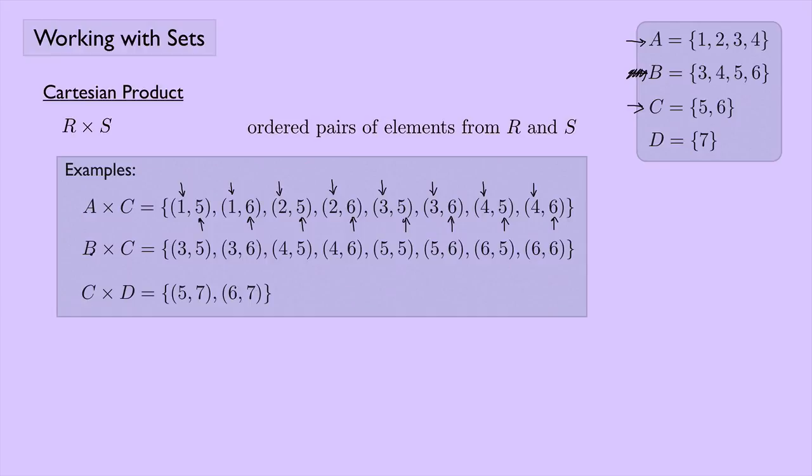Here's the Cartesian product of B and C. Here we see all the ordered pairs where the first element is from B, that would be the three, four, five, and six. And the second element is from C, that's the five and the six. It's okay to have duplicates in the sense like we have a five and a five, that's totally fine, and a six and a six.